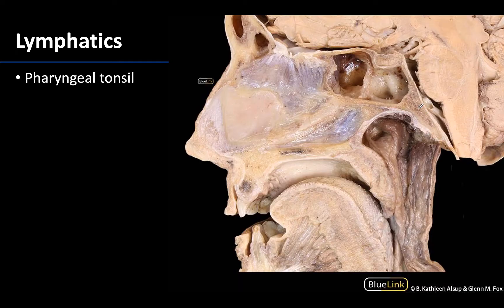The pharyngeal tonsil, sometimes referred to as the adenoid, particularly when enlarged, is going to be located in the roof and the lateral wall of the nasopharynx. Here is going to be the pharyngeal tonsil where I have this arrow.